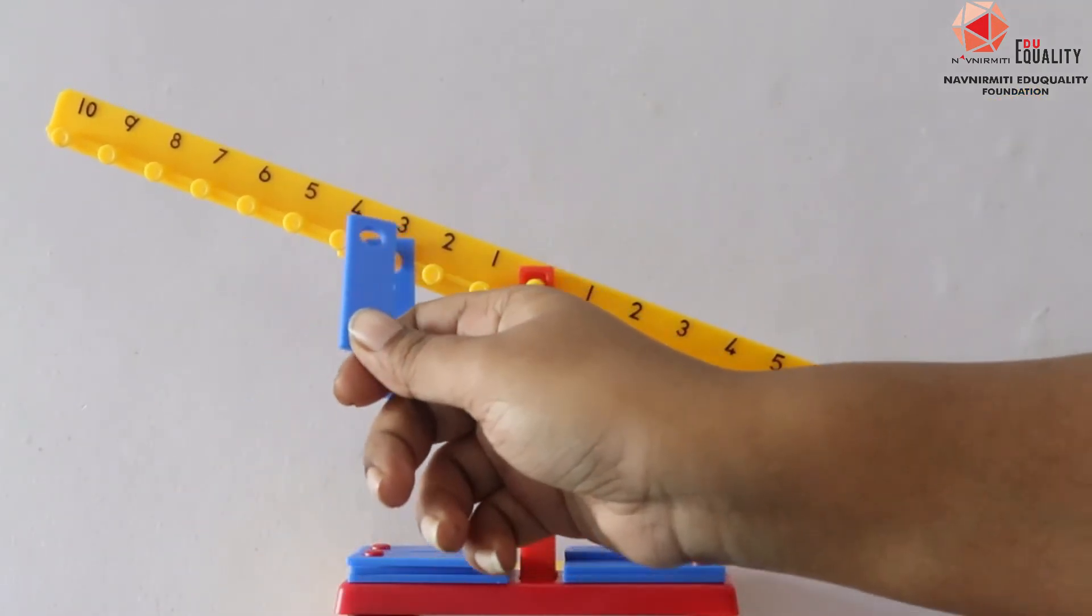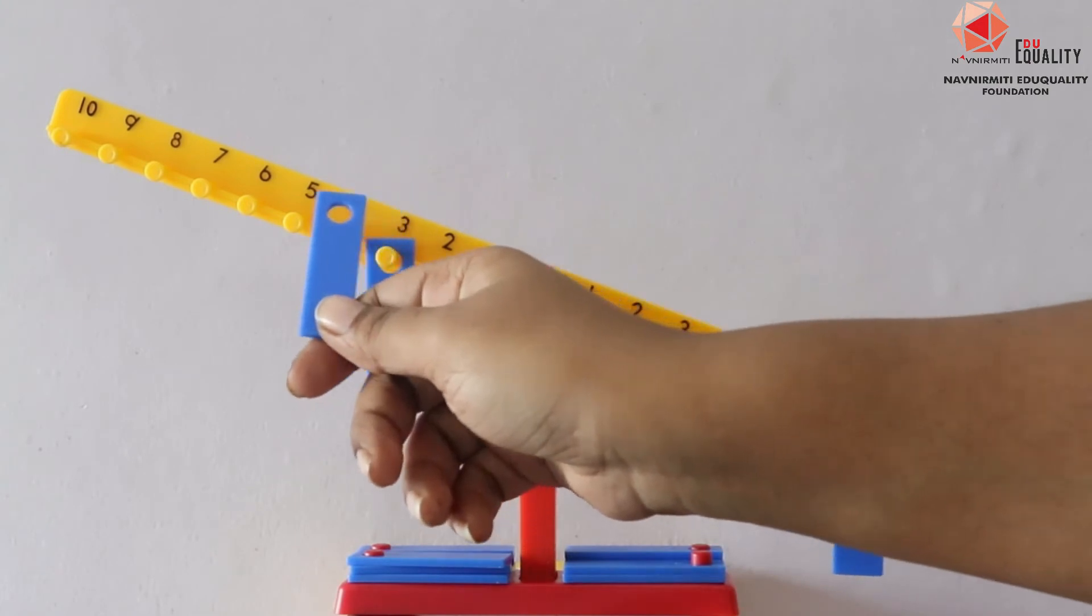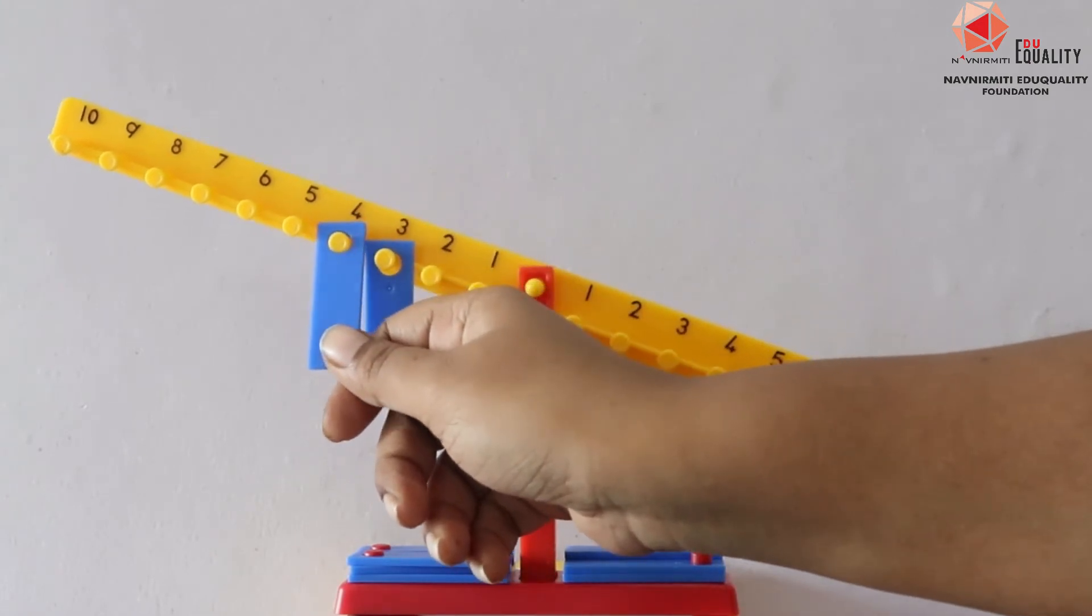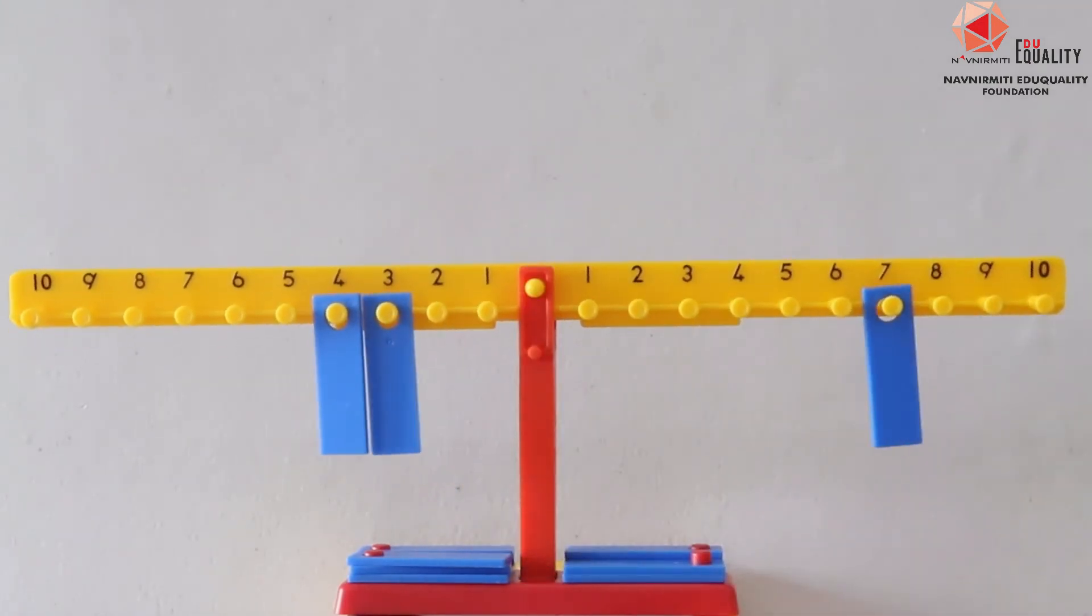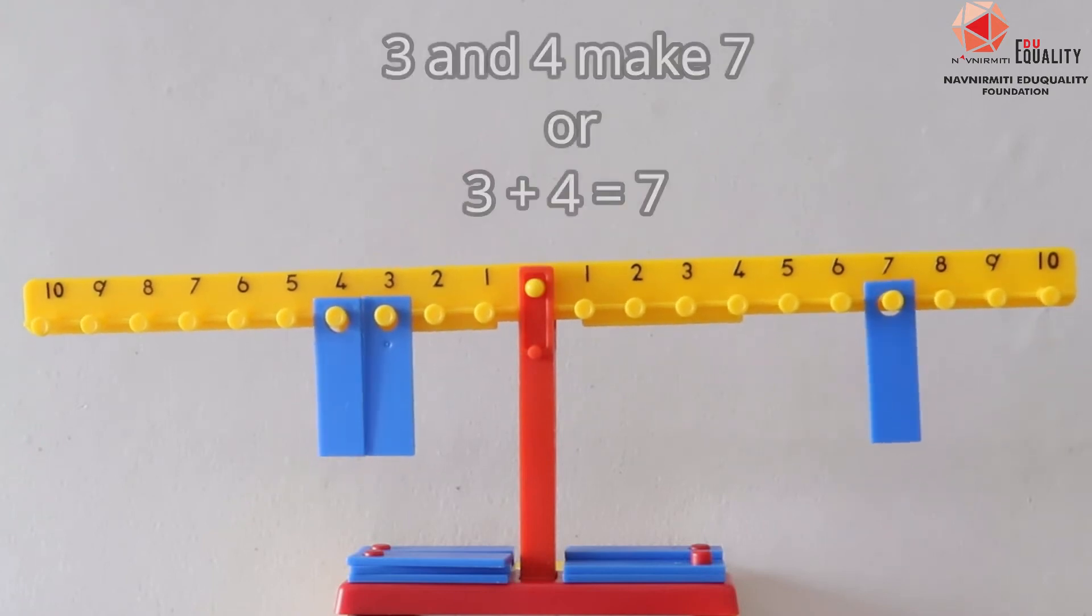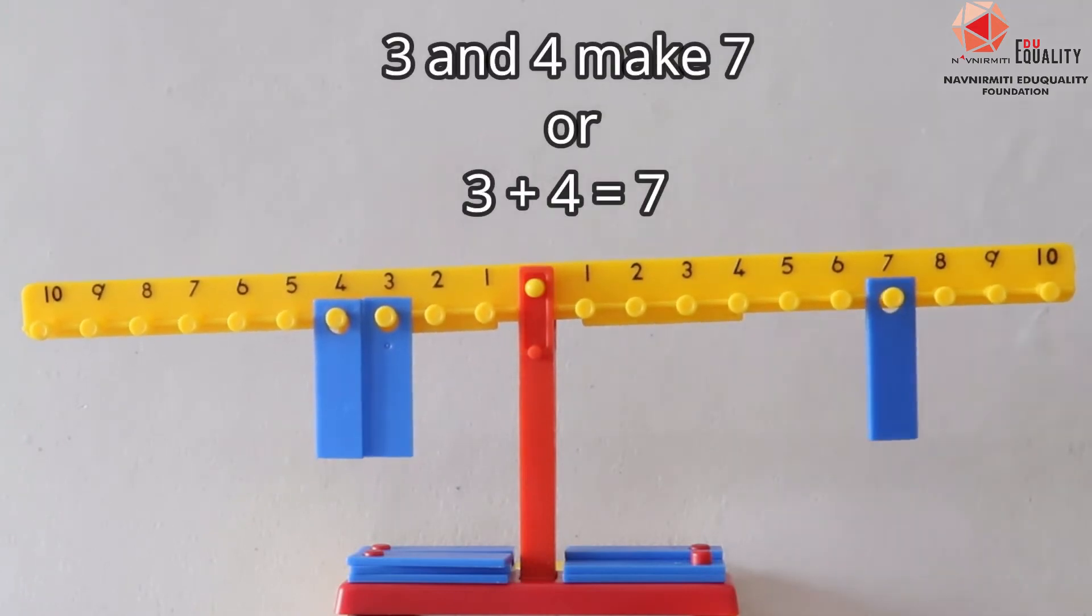So I take the weighing strip and let me place it on number 4. Here I can see that now it is balanced. So I can say that 3 and 4 make 7, or 3 plus 4 is 7.